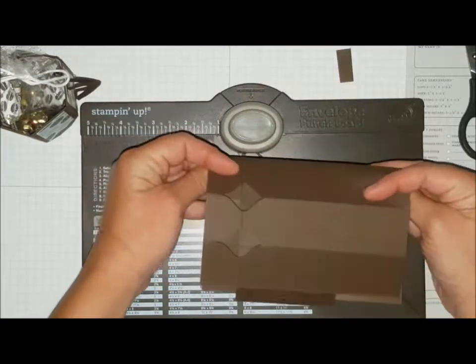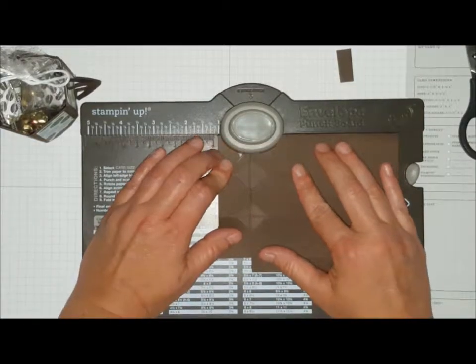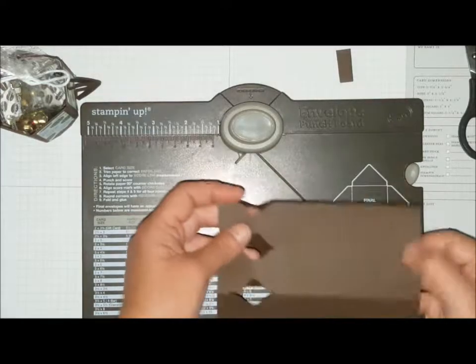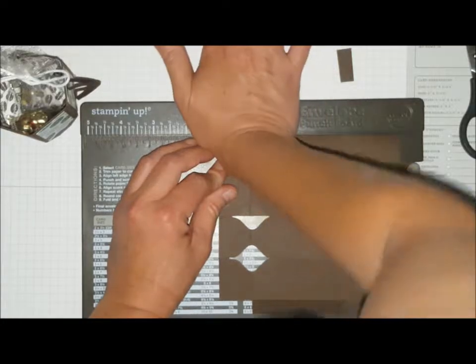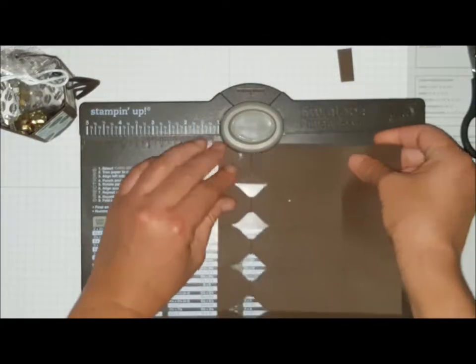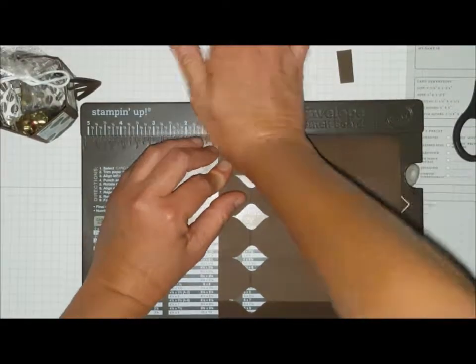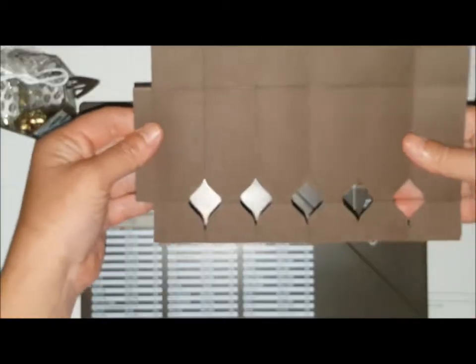Then you're going to go to your next line and do the same thing at the one inch mark and punch it. You're going to just keep moving down your score lines and punch until it looks like that.